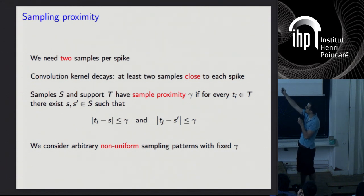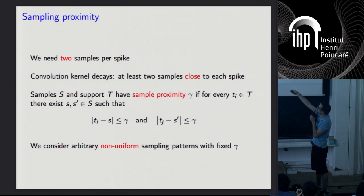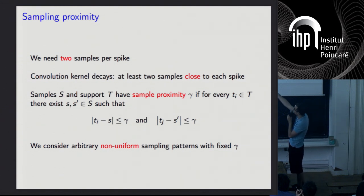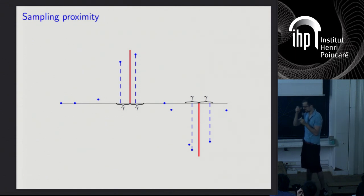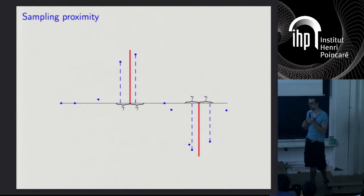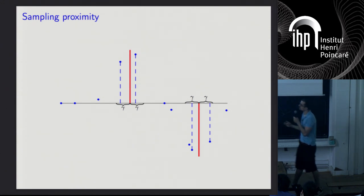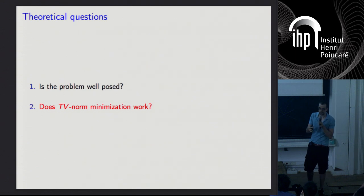We want to characterize arbitrary, possibly non-uniform sampling patterns. Something you cannot beat is needing at least two samples per spike, because you need to find the spike's location and amplitude — two independent parameters — so you need at least two data points. Furthermore, since the Gaussian and Ricker kernels decay fast, those two samples shouldn't be too far from the spike, or they'd contain negligible energy for that spike. So we define sample proximity: the sample set and support set have sample proximity gamma if for every spike in the support there are two samples within gamma of it.